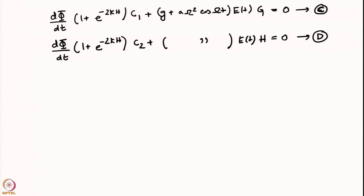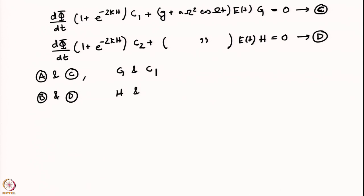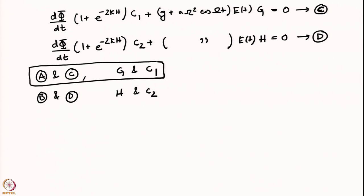You can notice a pattern: either treat this as a 4×4 matrix in C1, C2, g, and h, or as a 2×2 matrix. Equations A and C involve only the unknowns g and C1, while equations B and D involve h and C2. I will use equations A and C — using B and D leads to exactly the same conclusions.